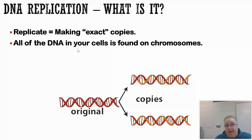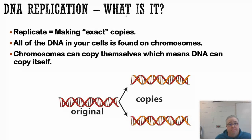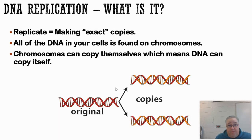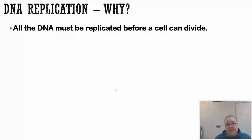All of your DNA is found on your chromosomes — we have 46 of those in every single body cell, and every chromosome is different. Chromosome number six is made up of different DNA than chromosome number seven or eight. Now, chromosomes have to copy themselves prior to cell division, which means your DNA can copy itself. All of the DNA in your body cells has to get copied before your cells can divide — that's the big "why." Your DNA has to replicate because your cells have to divide.